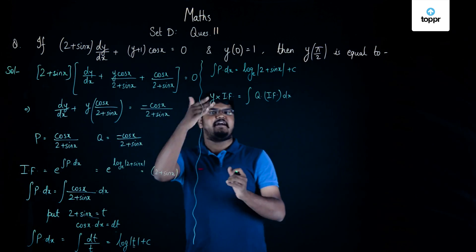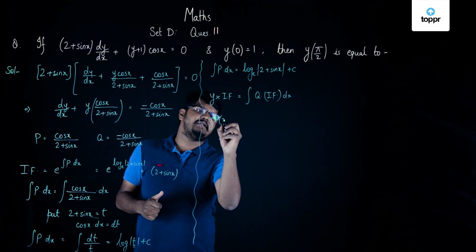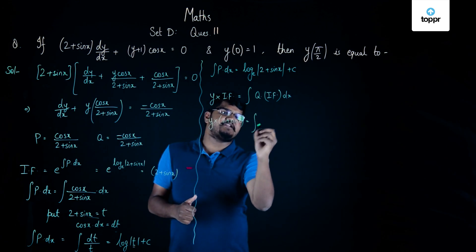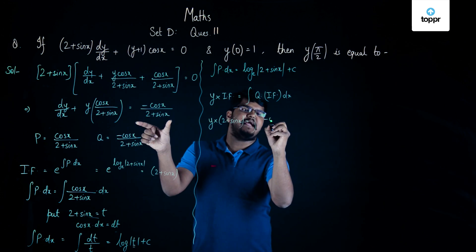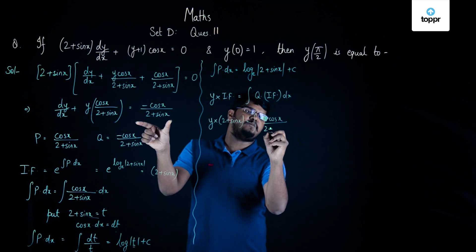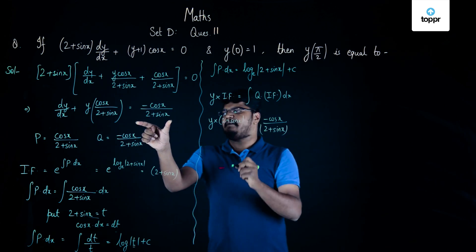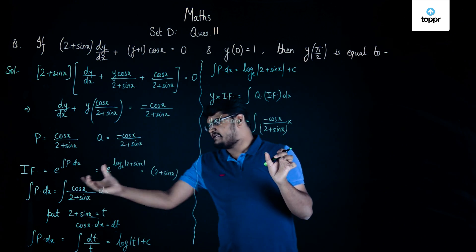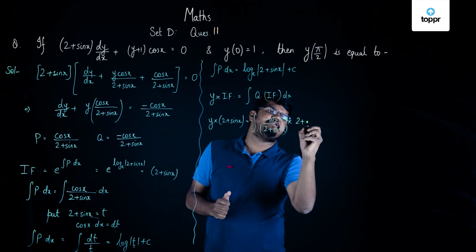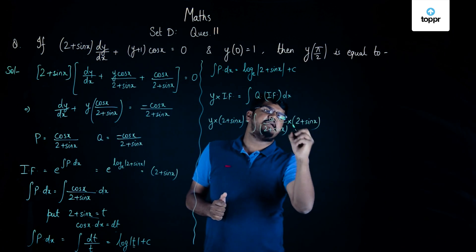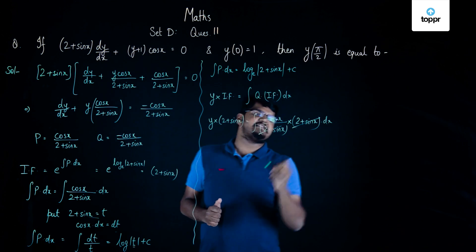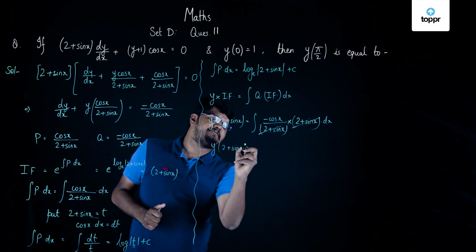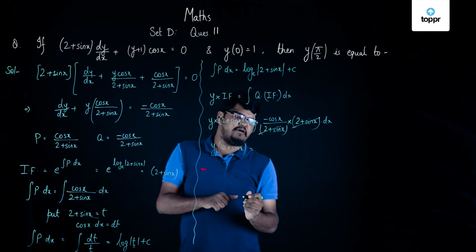Substituting the integrating factor into the solution formula y · IF = ∫Q · IF dx, we get y · (2 + sin x) = ∫[−cos x/(2 + sin x)] · (2 + sin x) dx. The (2 + sin x) terms cancel, leaving y · (2 + sin x) = ∫−cos x dx.